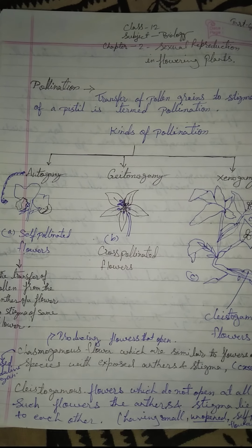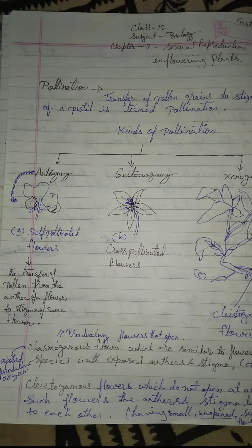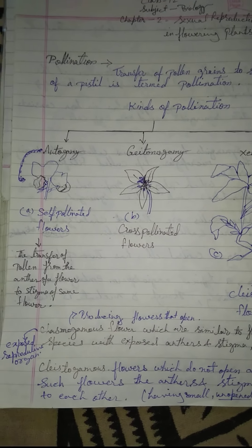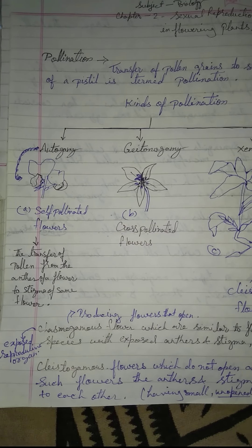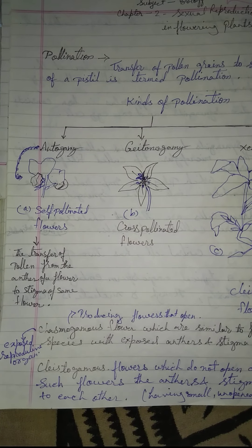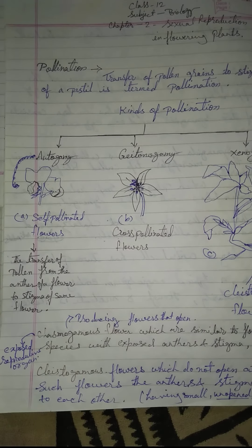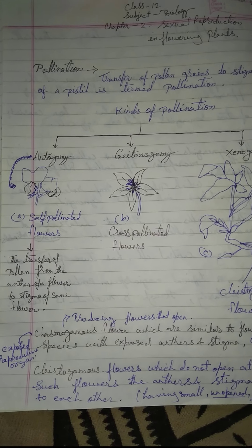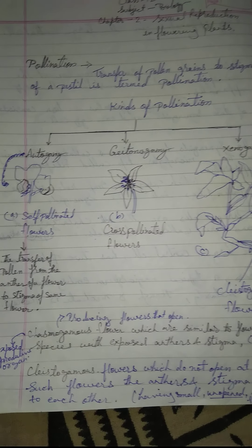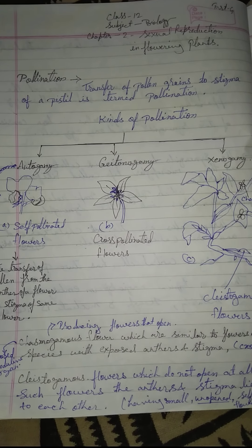Autogamy is self-pollination. What do we mean by self-pollinated flowers? It is the transfer of pollen from the anther of a flower to the stigma of the same flower. This is called self-pollinated flowers.